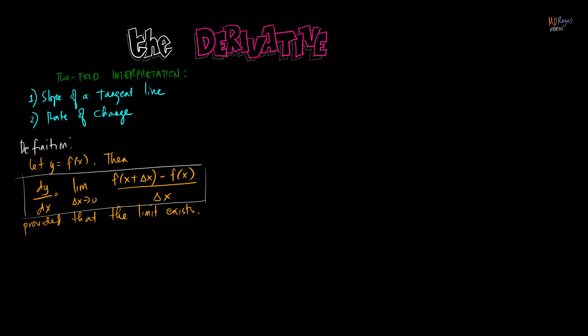Let me explain how this definition is interpreted as the slope of the line tangent to the graph of the function at a specific point. Let us first recall the formula for finding the slope of a line: m is equal to rise over run, or delta y over delta x.